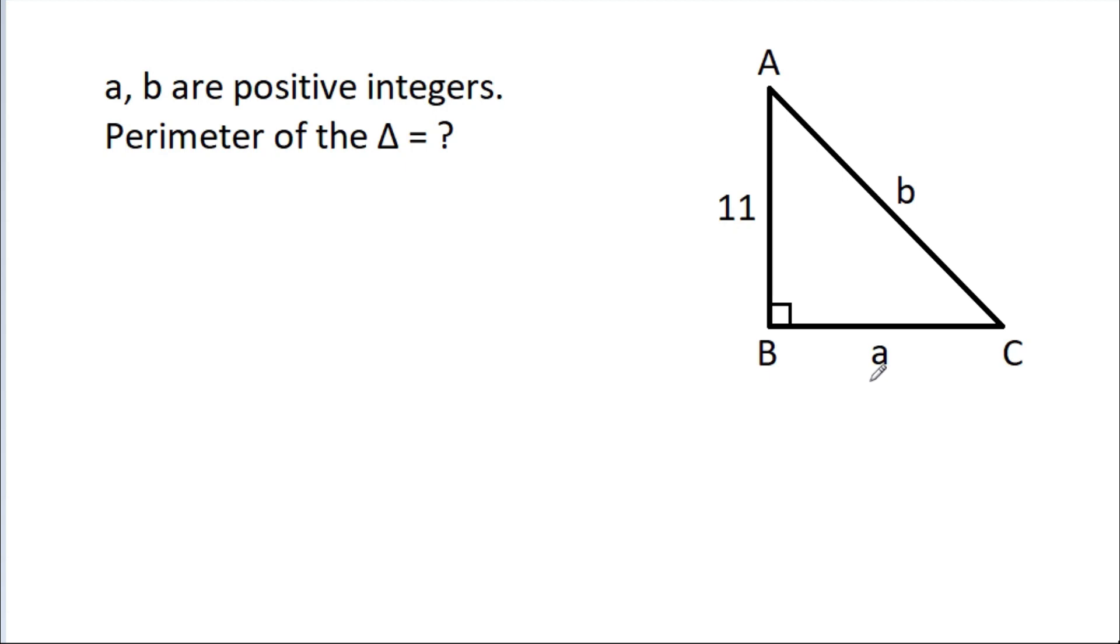In this video, we have given that a and b are positive integers, then we have to find the perimeter of the triangle.